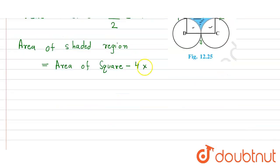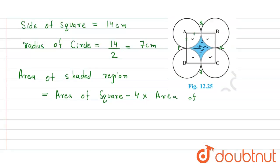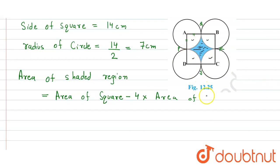So here we take 4 into the area of sector, and we assume that to be sector APQ, and here all are equal. So we just multiply it by 4.